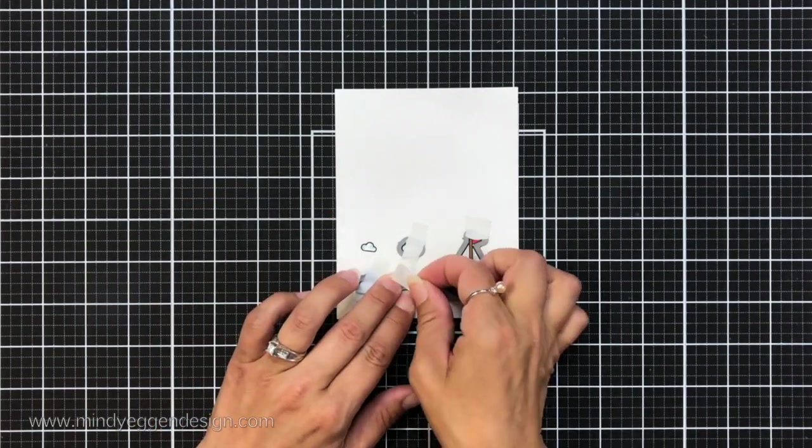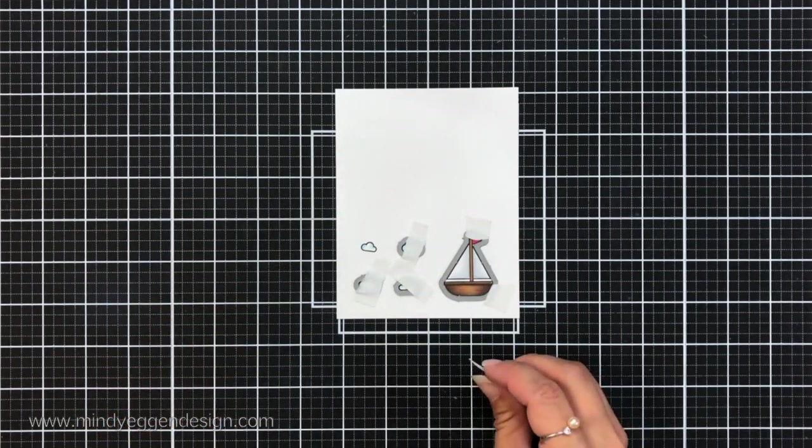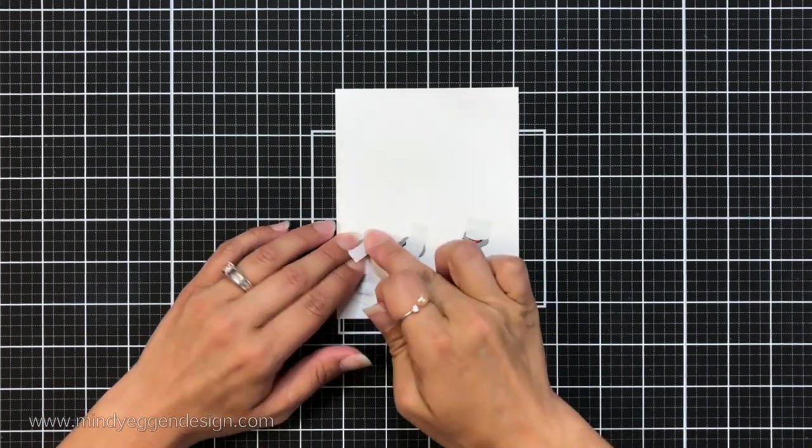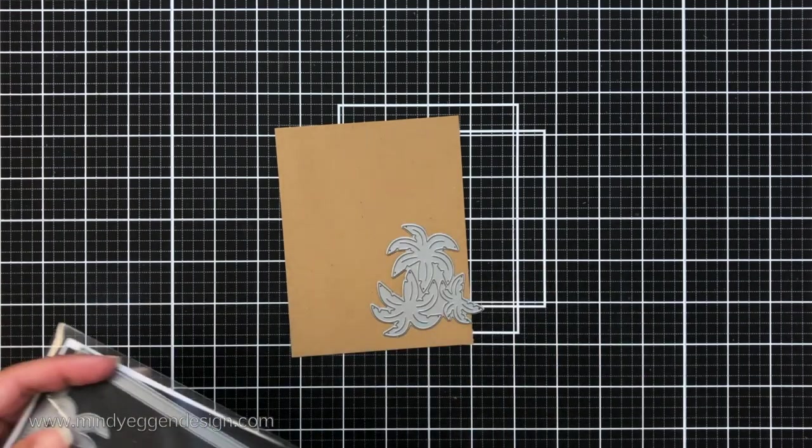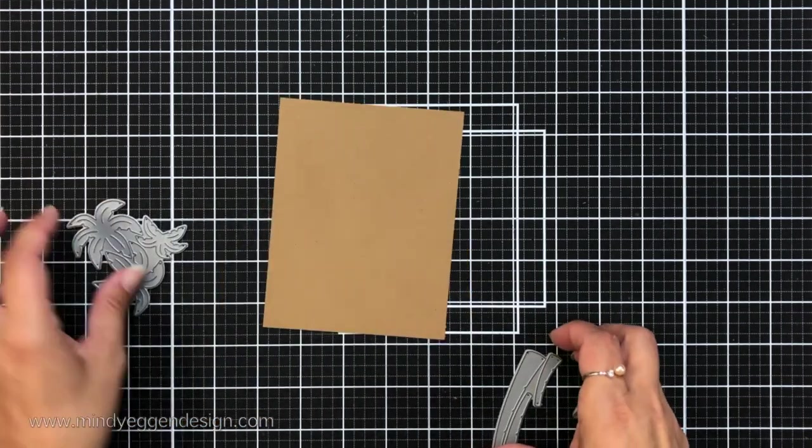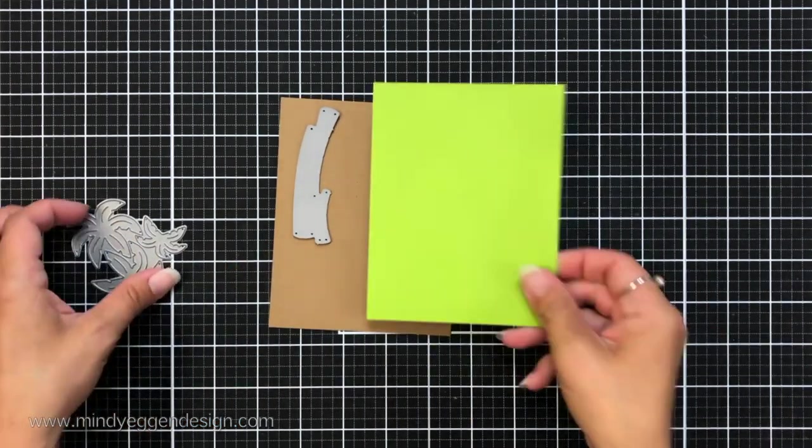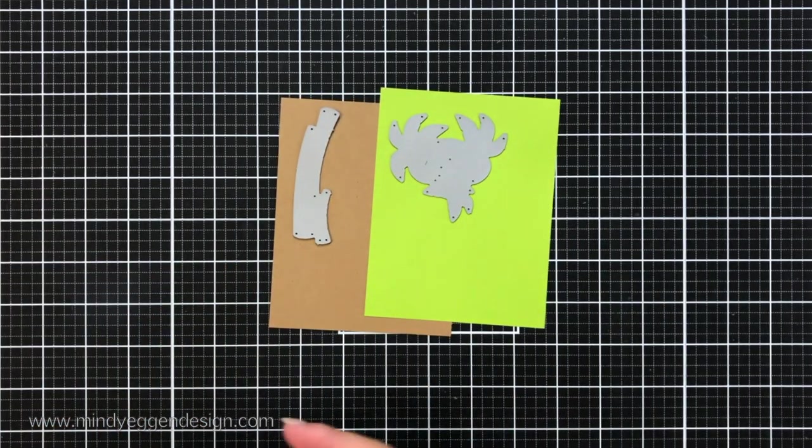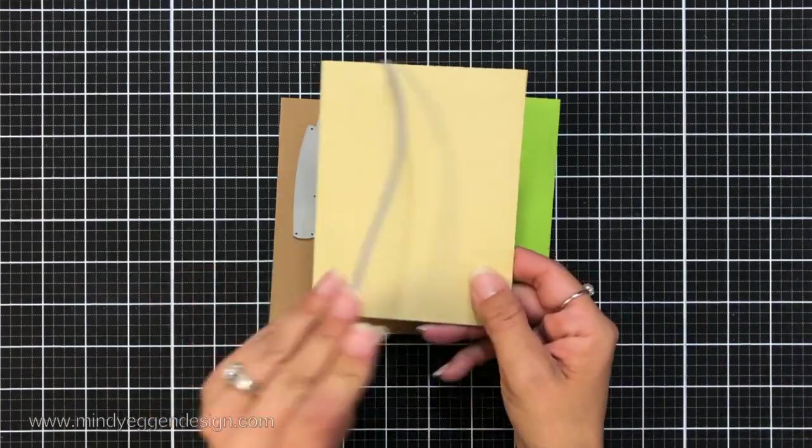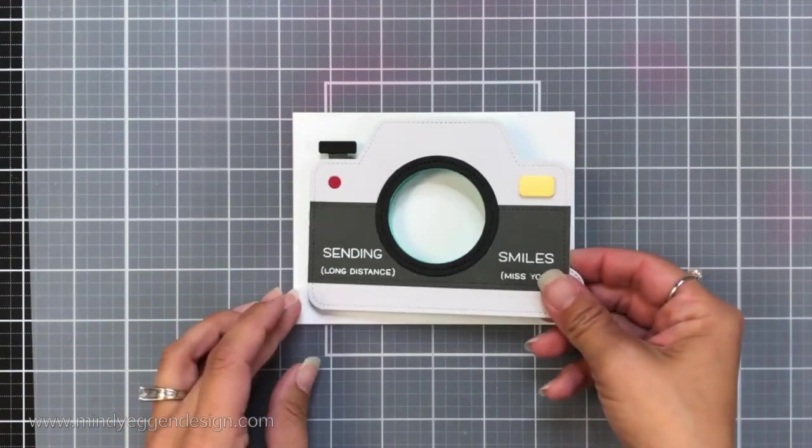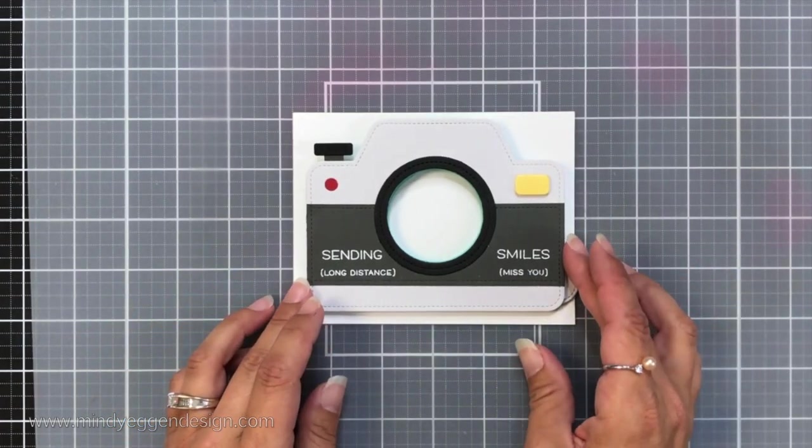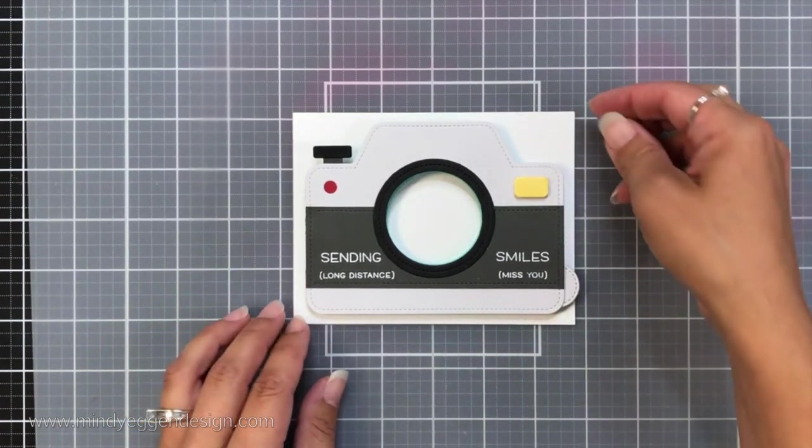Then I'm lining up the coordinating dies, holding them in place with some post-it tape and I'll run this through my die cutting machine. For the background I am going to be using the tropical background and I'm using those palm tree tops and the trunks. I'll die cut the trunks from paper bag cardstock twice and I'll cut the tops of the palm trees from cilantro cardstock twice and then the sand bottom I used that stitched hillside border and die cut it from gold rush cardstock.